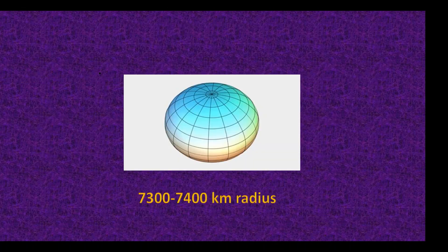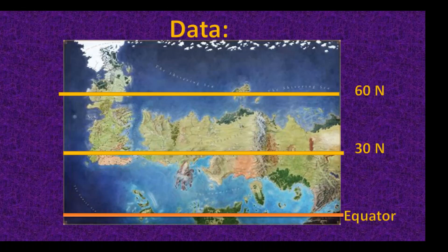We aren't done yet. Since Planetos orbits its sun and spins on its axis, centripetal force means it cannot be a perfect sphere — it has to be an oblate spheroid, slightly bulged at the equator. The radius range is essentially between 7,300 and 7,400 kilometers. This information helps us in four main ways: the oceans and their currents, the extreme west and east of the world, the causes of the seasons, and the possible size of Sothoryos.